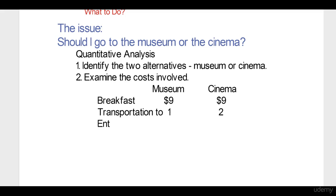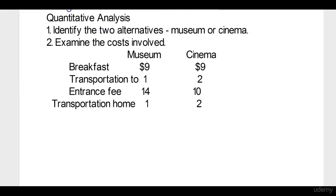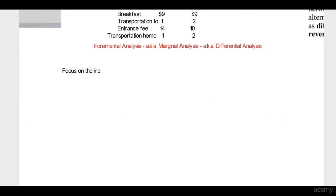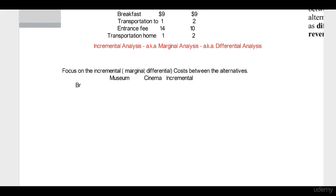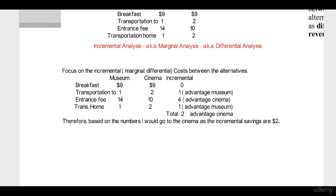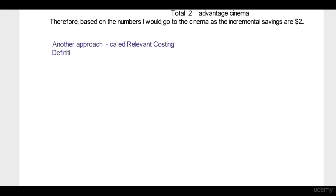The first cost is breakfast — nine dollars for both the museum and the cinema. Using the incremental approach, I focus on what is incremental to each alternative. Breakfast is nine dollars for both, so there is no incremental cost. Transportation is one dollar to the museum versus two dollars to the cinema, so the museum has the advantage. Going through all the costs, I end up with a two dollar incremental saving if I go to the cinema. That is the incremental or marginal approach.